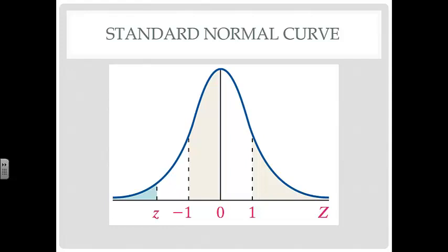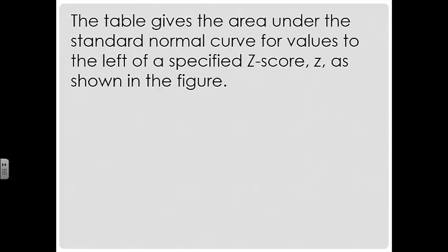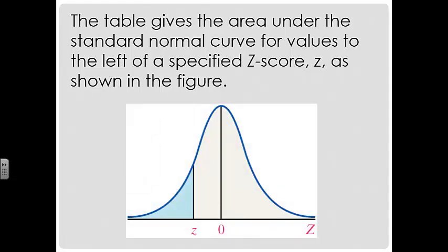Our Z-scores are the standard deviation values along the x-axis of the standard normal curve. The Z-table gives us the area under the standard normal curve for values to the left of a specified Z-score, as shown in the figure. We'll look at the table in an example, and a copy is also available in MyLabsPlus.